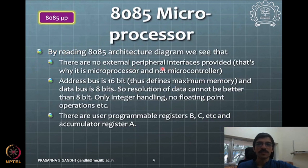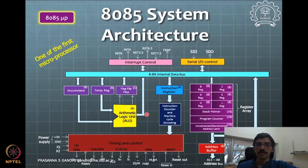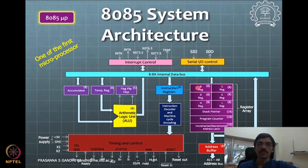There are no external interfaces visible in the 8085, which is why it is a microprocessor and not a microcontroller. The instructions when given for such a microcontroller are expressed in terms of these registers. For example, there is a move instruction — move B, C — meaning move contents of register C to register B. If you don't know the structure of this architecture you will not make sense of those commands. These architectural diagrams are quite important for understanding microcontroller systems.